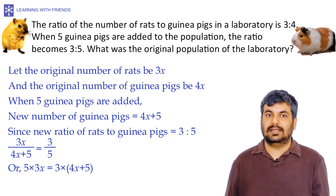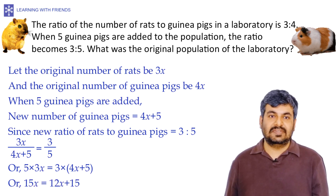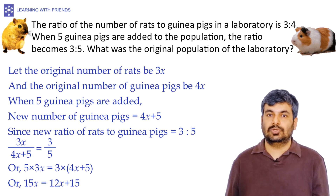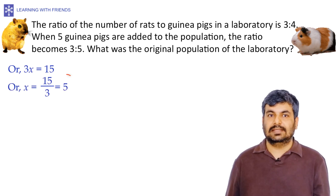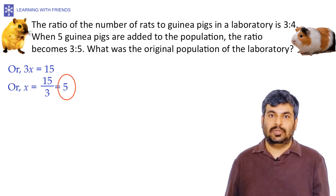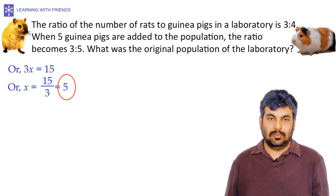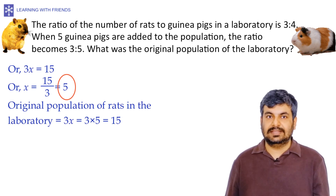Cross multiplying, we get 5 × 3x = 3 × (4x + 5). Expanding gives 15x = 12x + 15. Bringing like terms to one side gives 3x = 15, so x = 5. Now that we have x, we can find the original population of rats and guinea pigs.